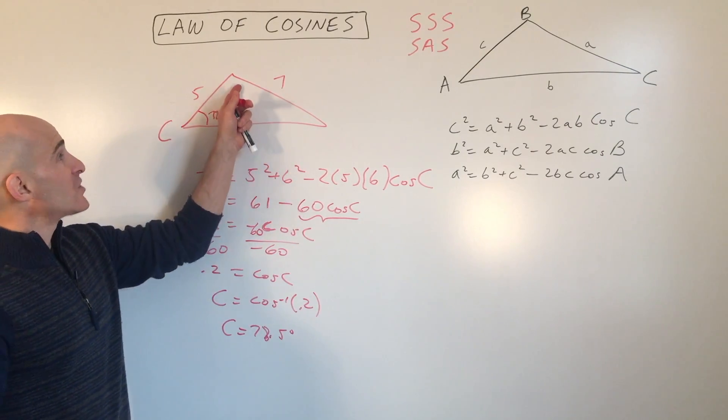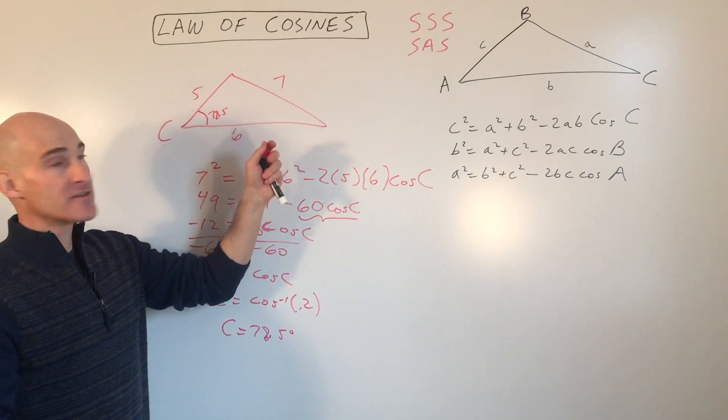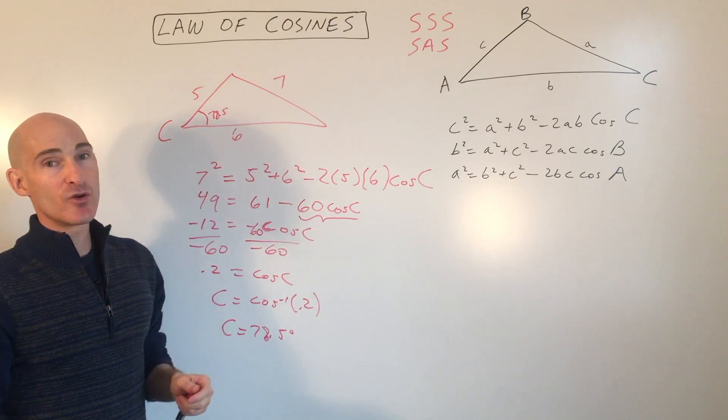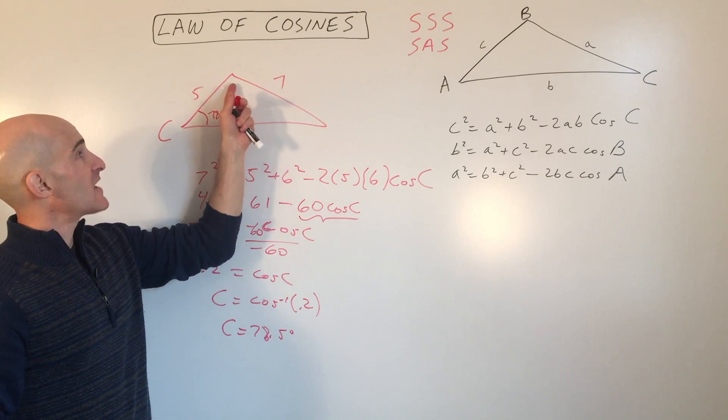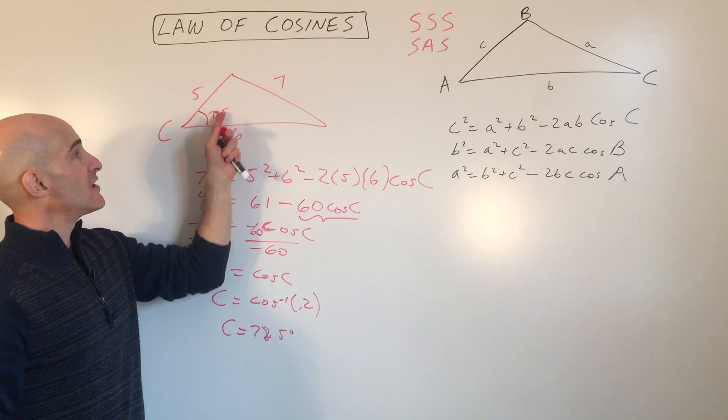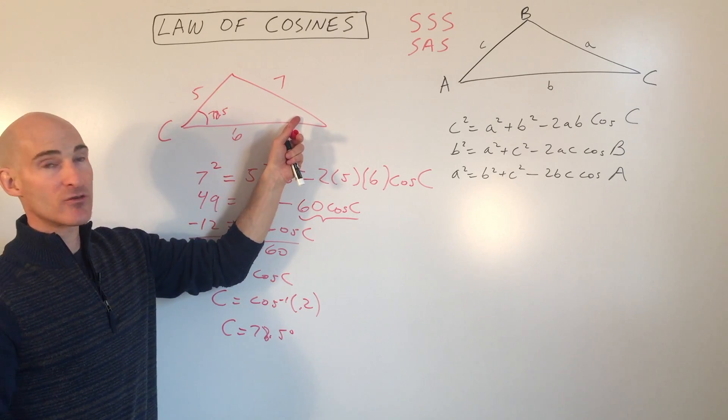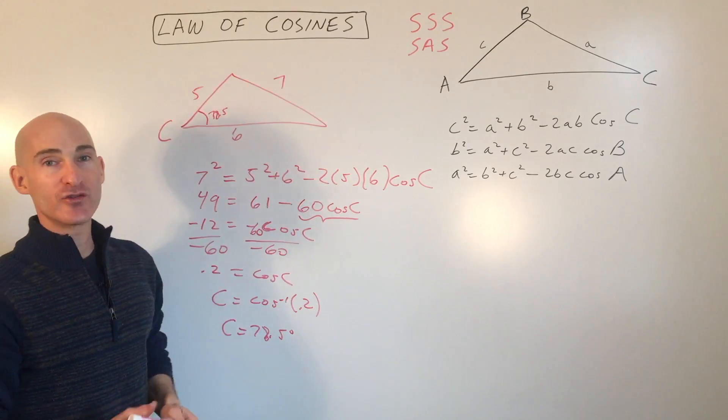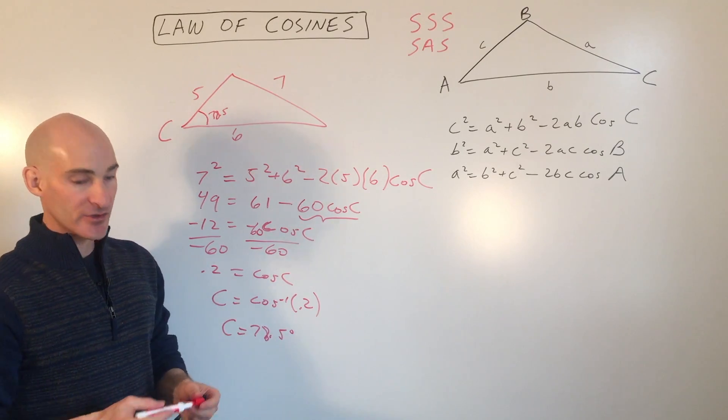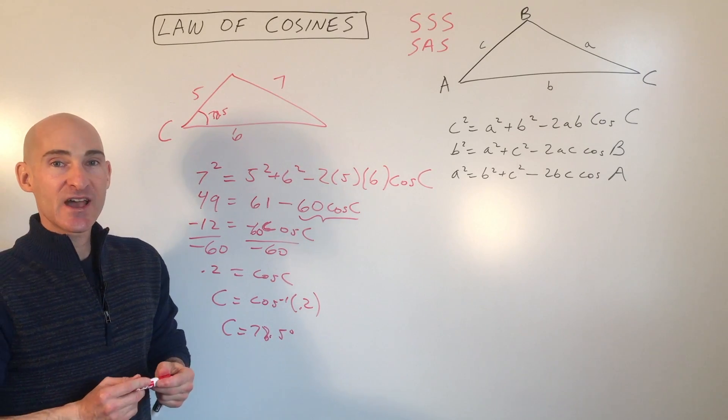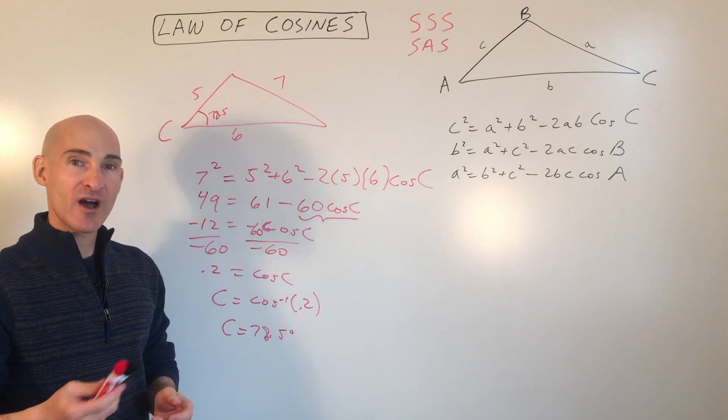Now, if you want to solve for these other two angles, now you can use the law of sines. You only have to use law of cosines at most once. You can use law of sines to find this angle. Then you have two angles. You can add those up and subtract from 180. And then you've solved the triangle. You found all the sides, all the angles. So this has been the law of cosines. Go ahead and review the video if you need to. I'll see you in the next video.